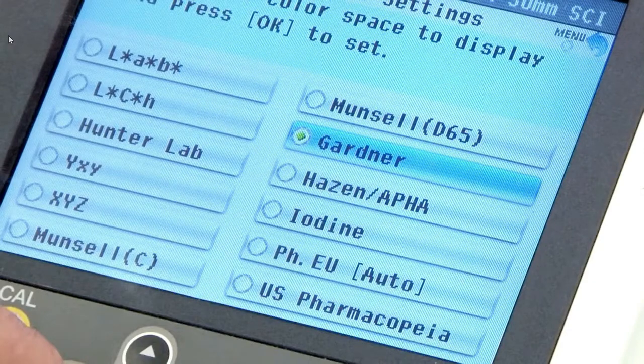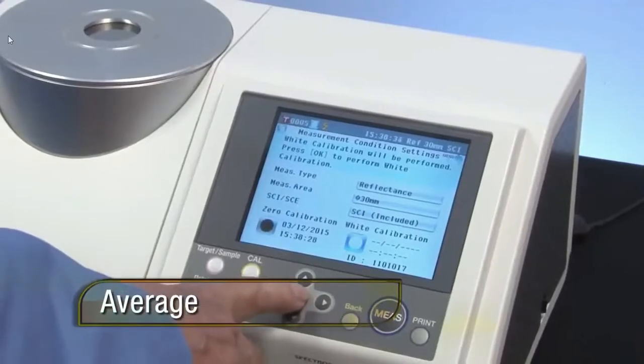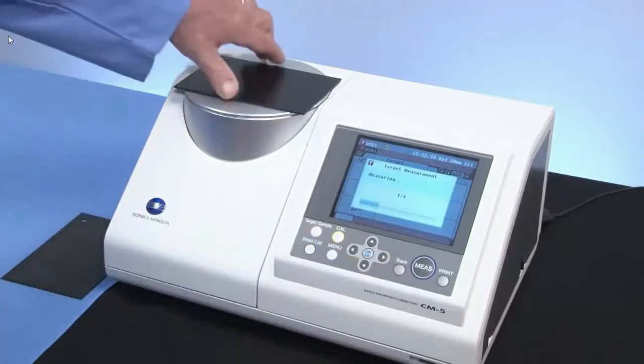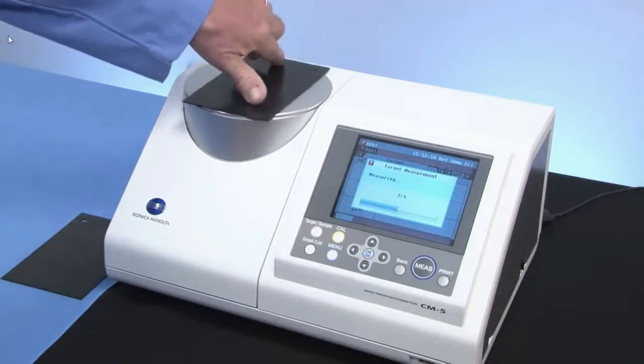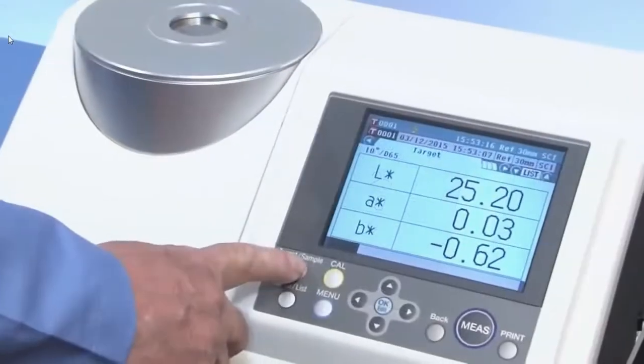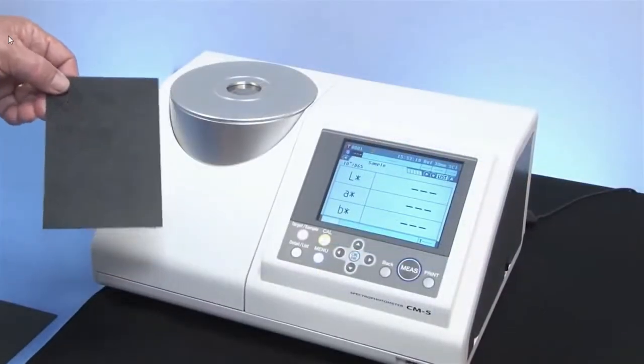The CM5 has an average measurement mode for textured materials. Calibrate, set the auto measurement, and turn the sample while automatic measurements are being taken. This setting is also used with color difference. For color difference, measure the sample color and the standard color, then save the values for each measurement.